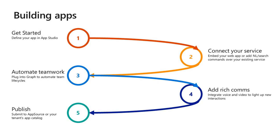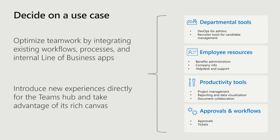You'll want to begin by thinking about what your use case is — what problem you're trying to solve. The goal of your app should be to optimize teamwork by integrating existing workflows, processes, or LOB apps into Microsoft Teams, taking advantage of the Teams canvas and all the different capabilities. Some examples of app categories include departmental tools like DevOps or for recruiters, employee resource tools for accessing benefits, company info, holidays, or help desk support, productivity tools for project management, reporting, and document collaboration, or custom workflows for scenarios like approvals, tickets, and internal routing.